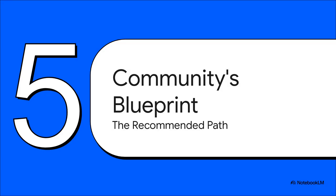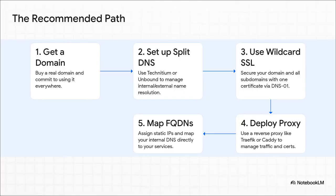So we've covered the problem, we've gone over the core concept of split DNS, and we've talked about the essential tools. Now let's put it all together with a clear, actionable blueprint that represents the community's consensus on the best way forward. Here it is — your five steps to networking sanity. Step one: get a real domain name. Step two: set up your internal DNS server, like Technitium or Unbound, to handle the split horizon magic. Step three: that single domain lets you easily generate one wildcard SSL certificate to secure literally everything. Step four: your reverse proxy, like Traefik or Caddy, takes that certificate and manages all your traffic. And finally, step five: map all your services with static IPs internally. Each step builds on the last, giving you a setup that's consistent, secure, and wonderfully simple.